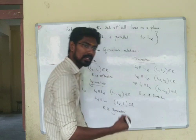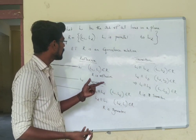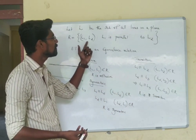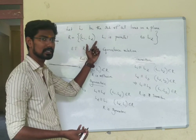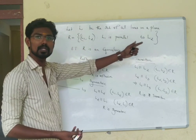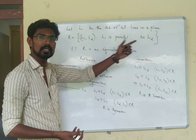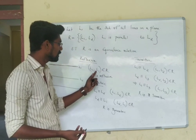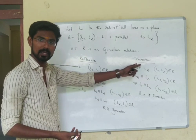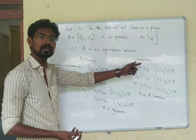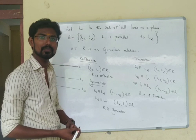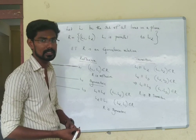Since R is reflexive, symmetric, and transitive, the relation R defined as the set of all (L1, L2) such that L1 is parallel to L2 is an equivalence relation.